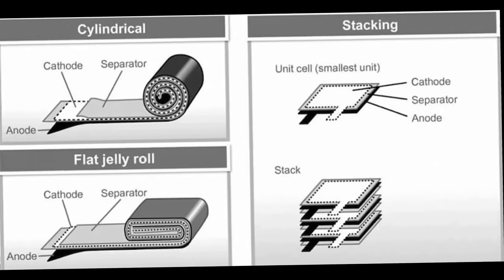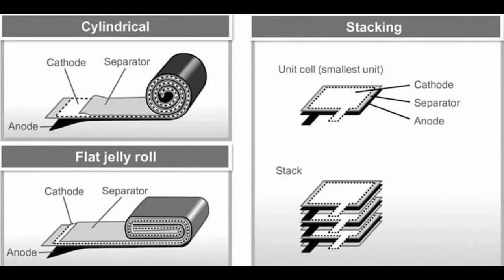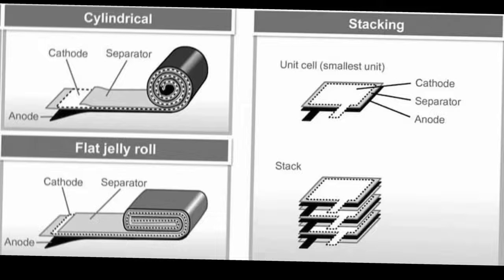Stacked battery technology uses a manufacturing process called lamination, in which battery elements and separator sheets are folded into zig-zag layers rather than rolled up. Because less space is wasted inside encapsulated cells, more active materials can be contained, resulting in greater overall capacity. This enables stacked cells to achieve higher energy densities than wound cells. At the same time, the heat is more evenly distributed in the battery cells, which helps to extend the life of the battery.